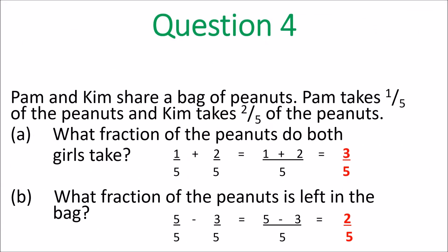Question 4. Pam and Kim share a bag of peanuts. Pam takes 1/5 and Kim takes 2/5. Add 1/5 and 2/5. You get 1 + 2 over 5, and it's 3/5. What fraction of peanuts is left in the bag? If they took 3/5, then it's 5/5 minus 3/5. You get 2/5. Got it? Fractions. You gotta know how to do these.